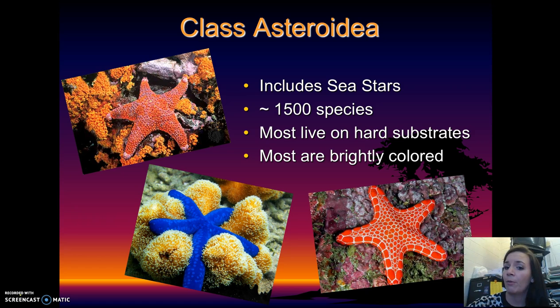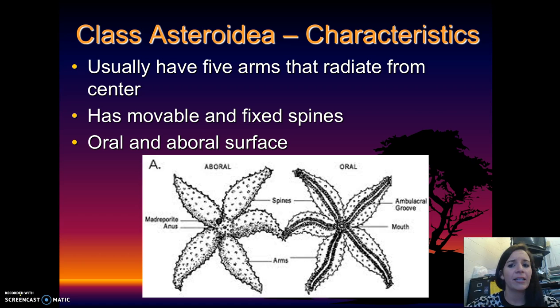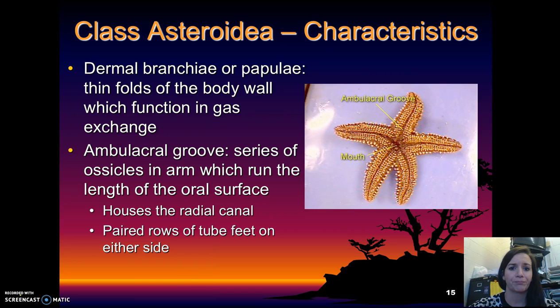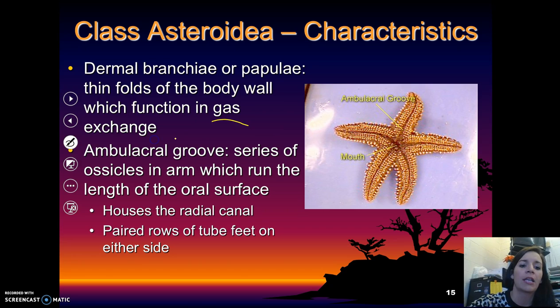Most of them are going to live on hard substrates and most of them are brightly colored, as you can see in the pictures here. This is typically what you think of when you think of a starfish. Some basic characteristics: they usually have five arms that radiate from the center, they do have movable and fixed spines, and they have that oral-aboral surface. They also have dermal branchiae or papulae, which are thin folds of the body wall that help with gas exchange.